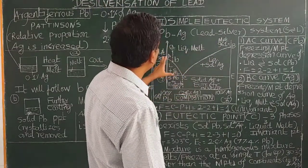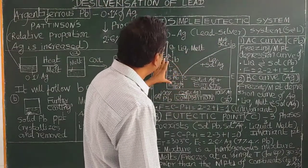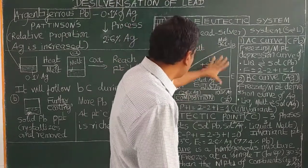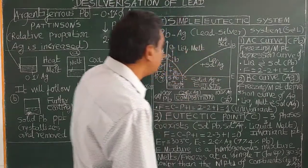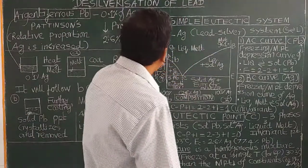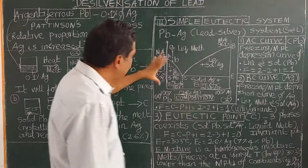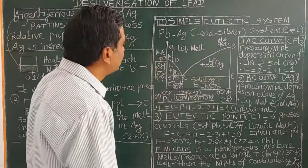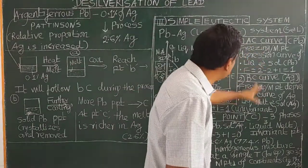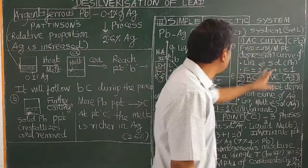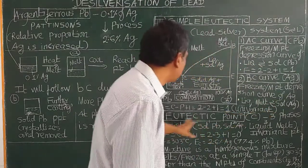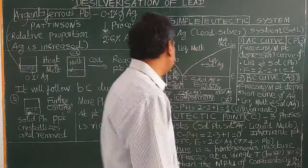First, you draw the phase diagram and label the parts. As we discussed in the previous class, there are three important points: the AC curve, the BC curve, and the eutectic point C.